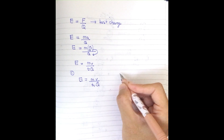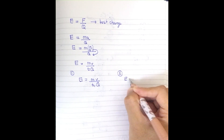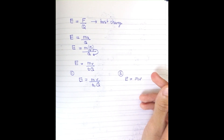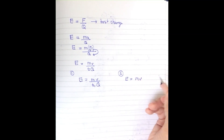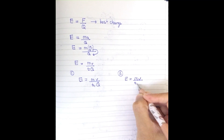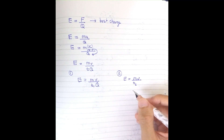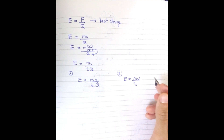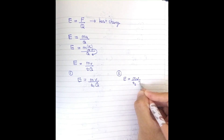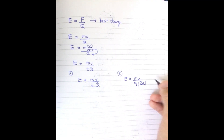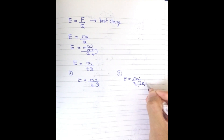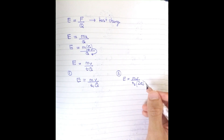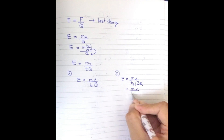For case two, the helium nucleus: E is the same since it's the same electric field. The speed change is also the same. I use t2 for helium's time. The charge of helium is 2q, because it has two protons, so the charge is twice the elementary charge. So for helium: E equals mv divided by t2 times 2q.